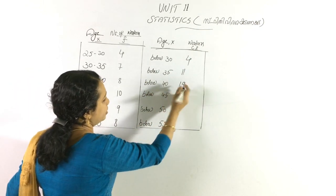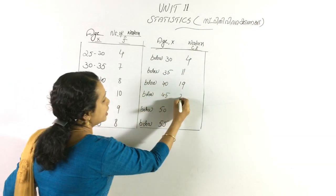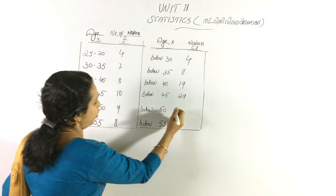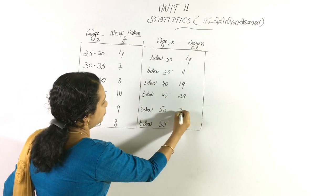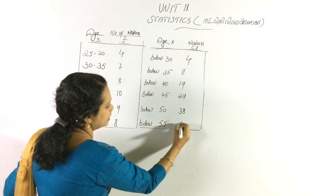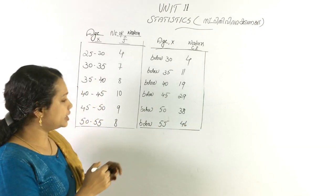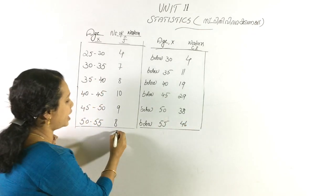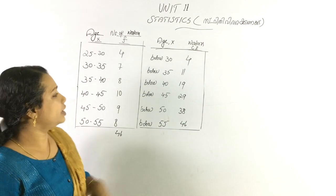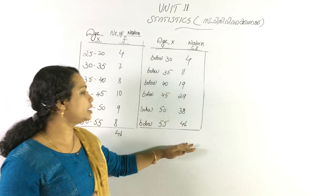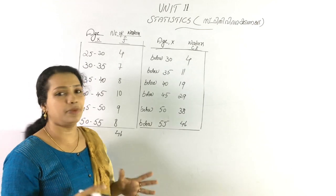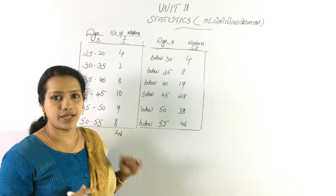Then: 10, 11 plus 10 is 21, 21 plus 9 is 38, 38 plus 8 is 46. So 46 are the workers. This is the median of the age.